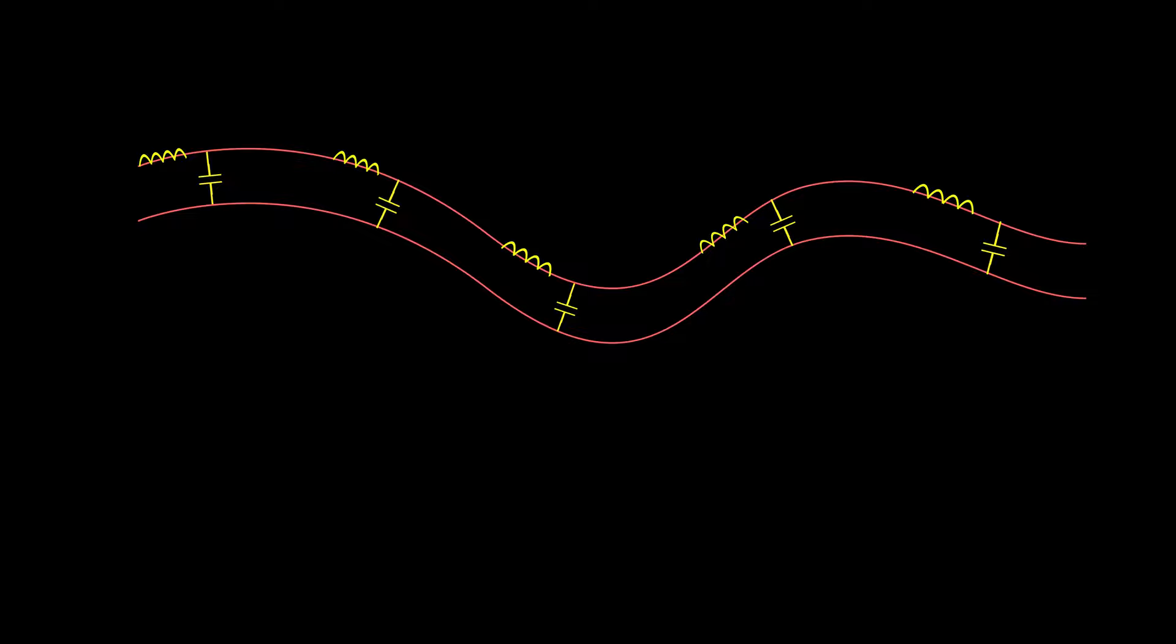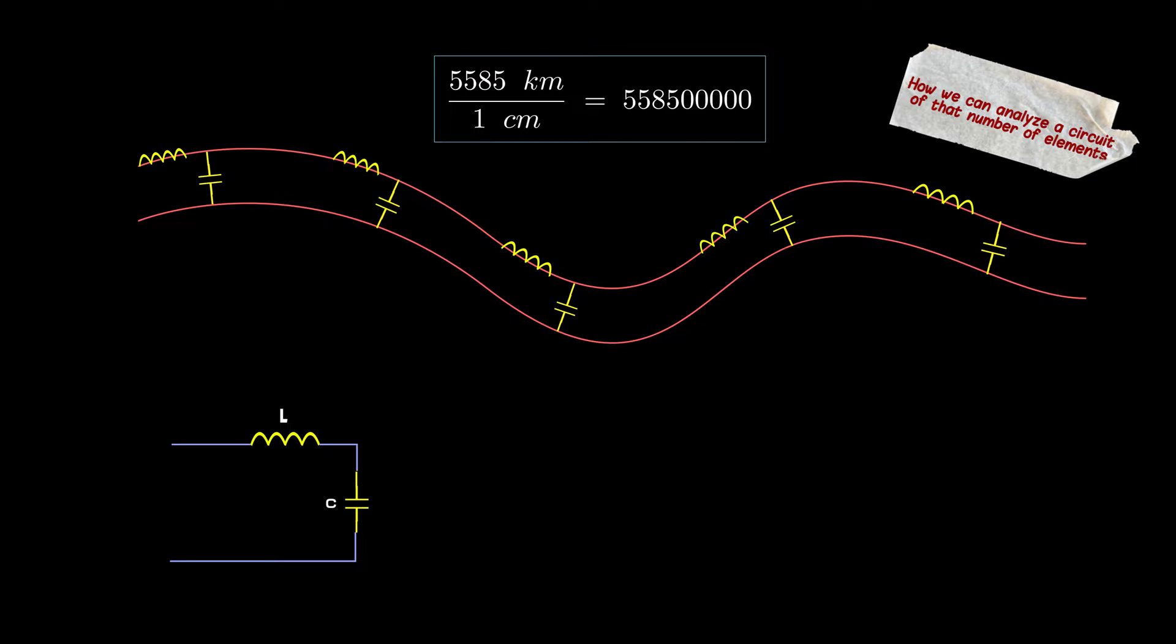And here comes the problem. For one centimeter long section, we would need more than 500 million inductors and capacitors. Even the most efficient simulator running on the most powerful computer can't deal with that. So how did people solve this problem when the first transatlantic cable was laid out in 1857? Well, have you heard about infinite ladder networks before?